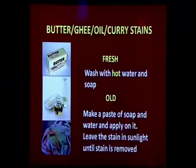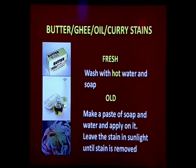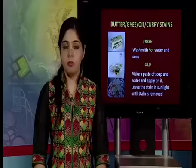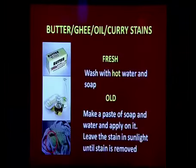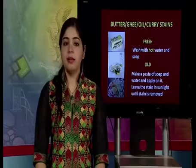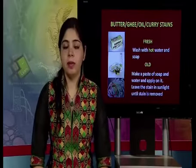For oil, wax, and fat stains — applicable to all fabrics including white cotton, colored cotton, silk, woolens, and synthetics like polyester, acrylic, and nylon — you can use the same procedure. For fresh stains, wash with hot water and soap. For old stains, make a paste of soap and water, apply onto the stain, and leave in sunlight until the stain is removed, as sunlight acts as a natural bleach.